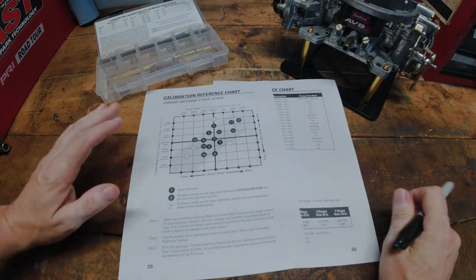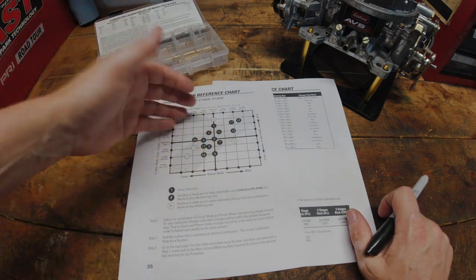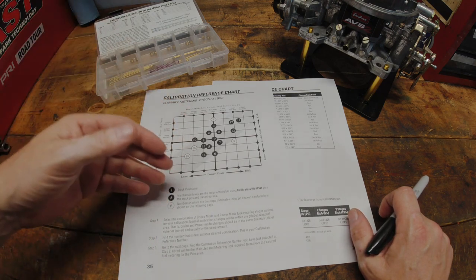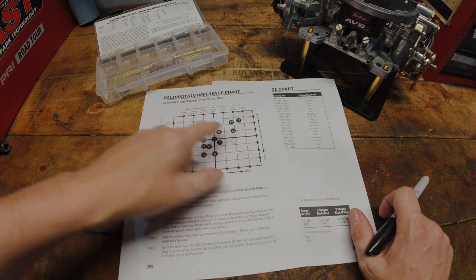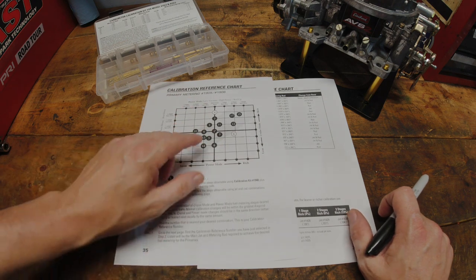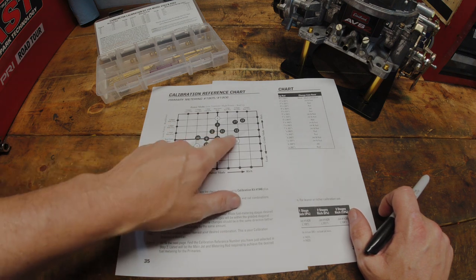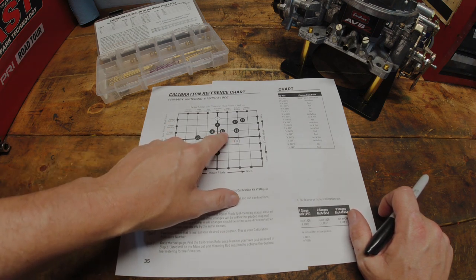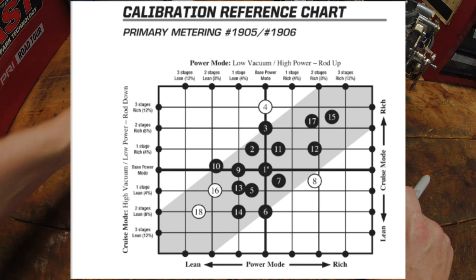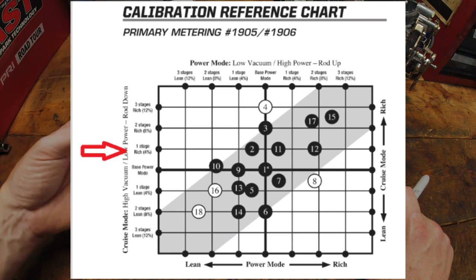Now, this is one thing I've always loved about the Edelbrock carburetor is they give you these very nice reference charts. We've talked about these and how to read them before, but now we're going to look at them a little bit differently. So let's say you're at sea level and your calibration, for whatever it is, let's make it something simple here so we can kind of look at how this goes. So let's say your base calibration here is at number 11.